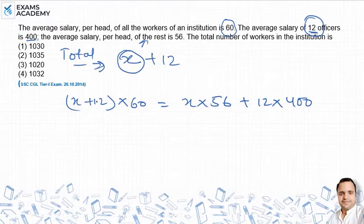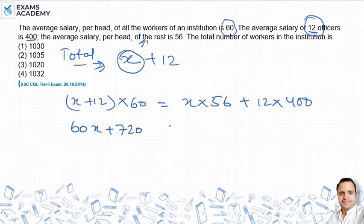So we get: 60X plus 720 equals 56X plus 4800, where 12 into 60 is 720, and 12 into 400 is 4800.